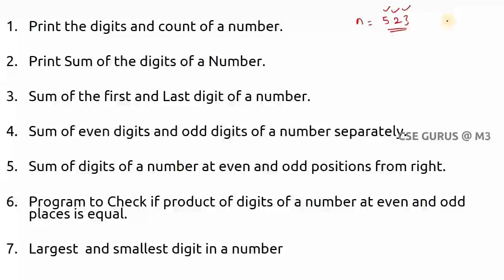Here, my logic is: whenever I want to print from the right side, how to get digit 3 — that is, the digit in the one's position of any number. When you divide a number by 10, what will be the remainder? For 523 divided by 10, the remainder is 3. Even if you take 28, 28 % 10 is 8. So when you divide any number by 10, the remainder is the last digit.